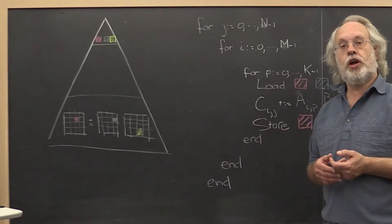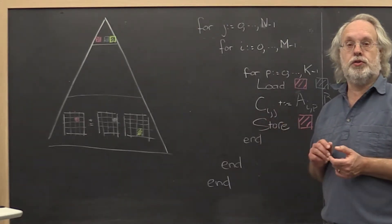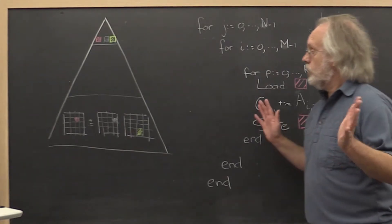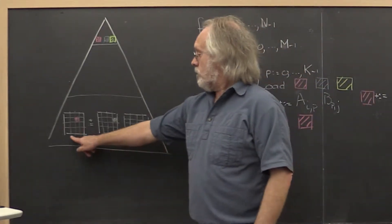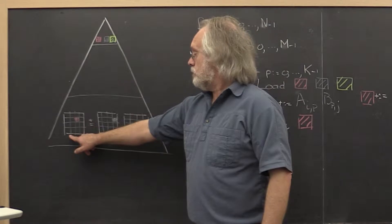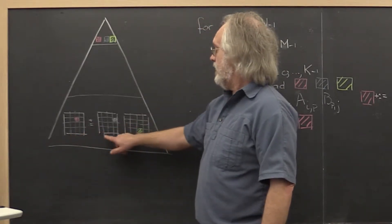So now we're ready to start talking about a naive approach to blocking for registers. What do we have here? We're performing a matrix-matrix multiply, C updated with A times B.